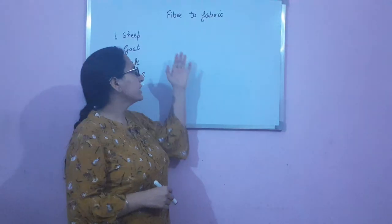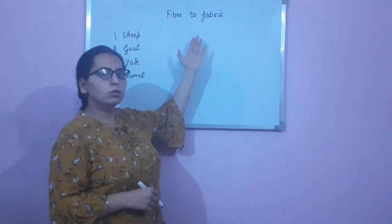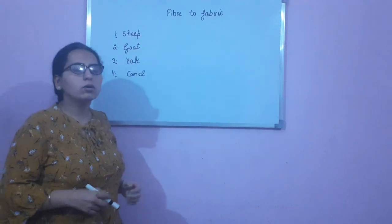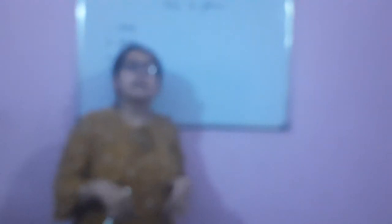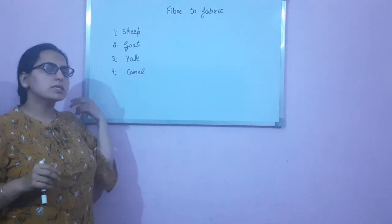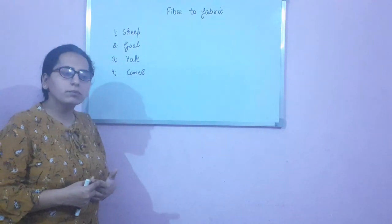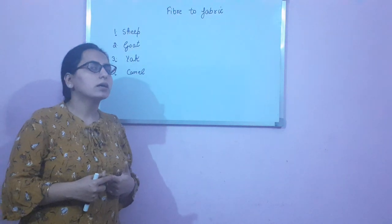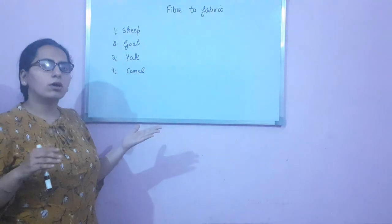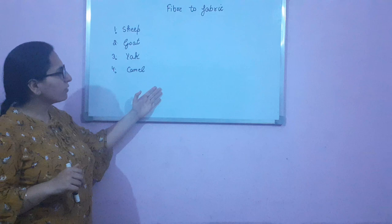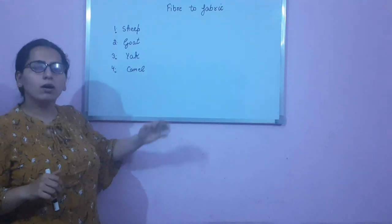Good morning everyone. Yesterday we had started the chapter Fiber to Fabric and we were discussing the topic Fibers. Fibers are thin strands of thread that are further made up of still thinner strands. Fibers are of two types: natural and synthetic. Natural fibers are obtained from nature, either from plants or from animals. Today we continue with the topic Wool — a natural fiber obtained from animals.